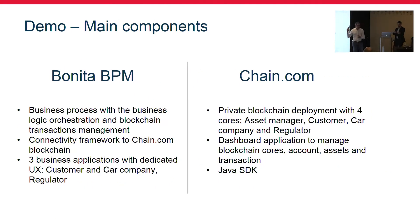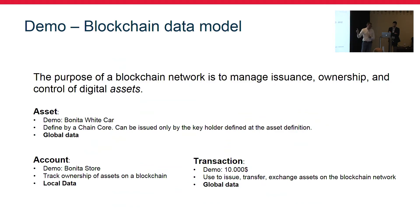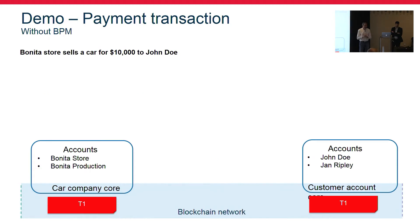For the integration we're using two open source products: Bonita BPM for the business process and applications, and Chain.com to deploy a private blockchain implementation. In the architecture, at the bottom we have the private blockchain with different cores for every party; on top is the business logic of the processes; and above that are the dedicated applications for each company. For the data model, we use the default blockchain model: assets, accounts, and transactions — some of which are global and some local.